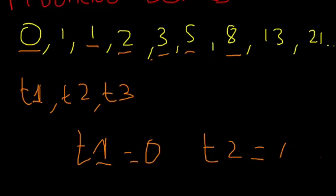And what is t3? t3 is t1 plus t2. Now, depending on how many numbers you want to generate, let's say you want the first hundred Fibonacci numbers.